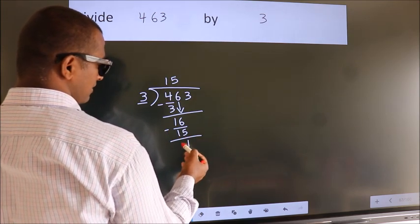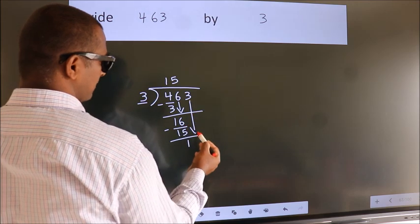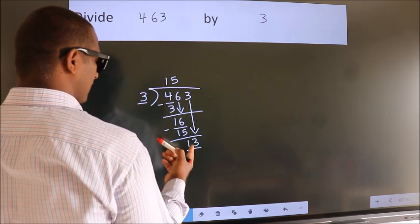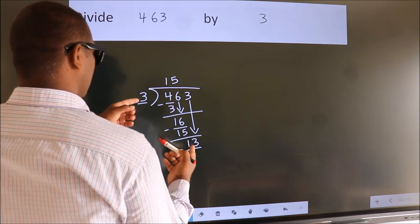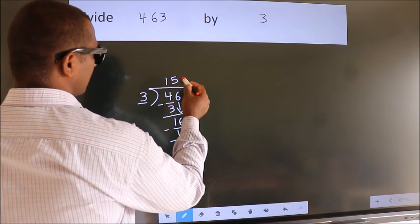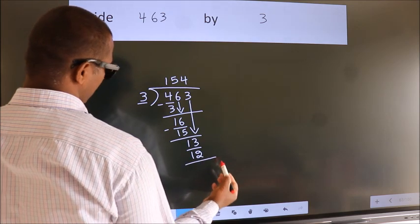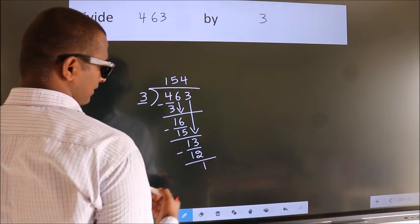After this, bring down the beside number. So 3 down. So 13. A number close to 13 in 3 table is 3 fours 12. Now we subtract. We get 1.